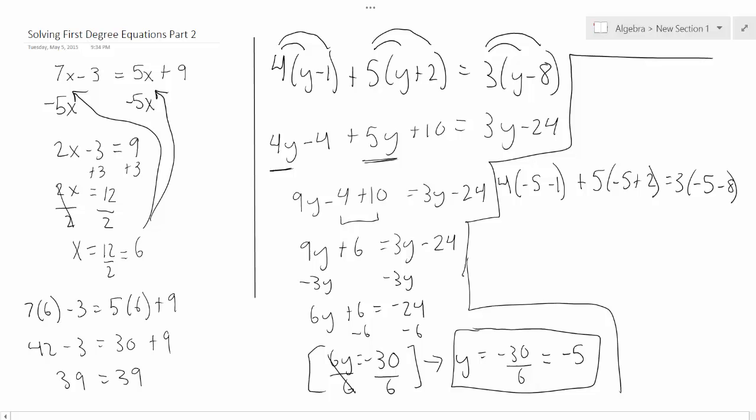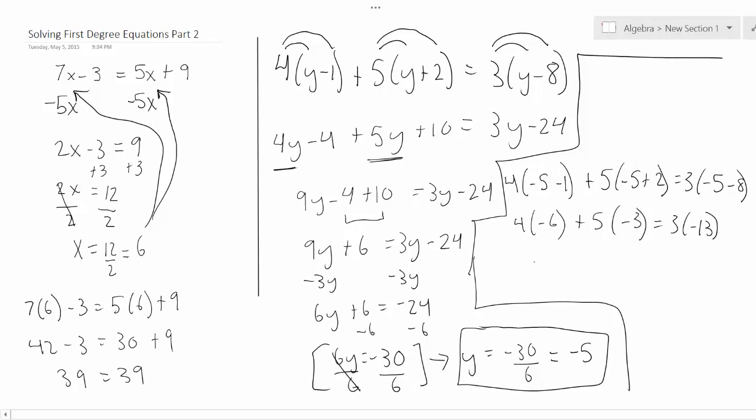So we have 4 times negative 6, plus 5 times negative 3, equals 3 times negative 13. So then you'll get negative 24 minus 15 equals negative 39. And once again, negative 39 does equal negative 39. And that's it.